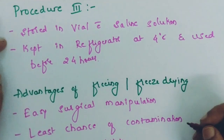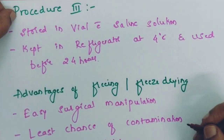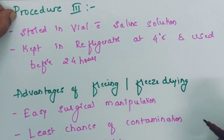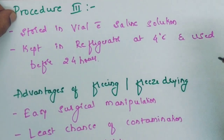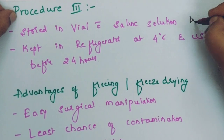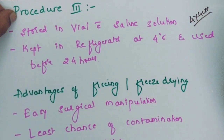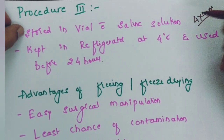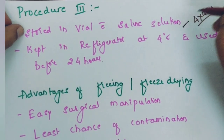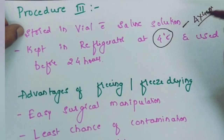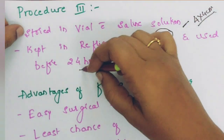In procedure 3, the amniotic membrane is not stored at minus 80 degrees. Instead, fresh amniotic membrane is used for transplantation. The steps up to making 4 x 4 cm pieces are similar to procedure 1, then the amniotic membrane is stored in a vial with saline solution and kept in the refrigerator at 4 degrees centigrade. This can be used only within 24 hours.